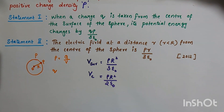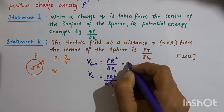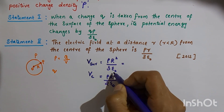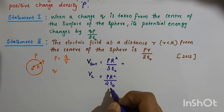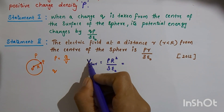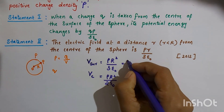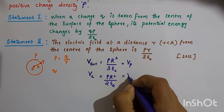The potential energy at the centre is rho R squared by 2 epsilon 0. To clarify — that is the potential, not potential energy. The potential at the surface is V_P equals rho R squared by 3 epsilon 0, and the potential at the centre, V_O, equals rho R squared by 2 epsilon 0.